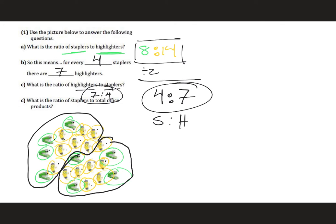Now what is the ratio of staplers to total office products? Well we already know that for staplers the number is four. To total office products we're going to add up the staplers and the highlighters numbers. Four plus seven is eleven, so it would be four to eleven.